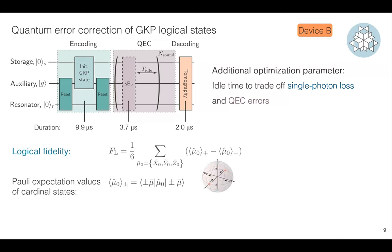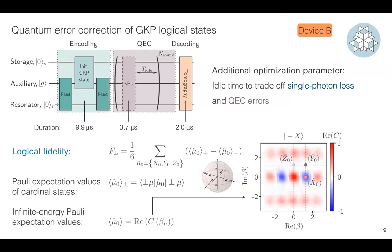Instead of measuring the full characteristic function, we measure only a few points to extract the logical fidelity. The logical fidelity is defined by looking at the distance between opposite cardinal states on the Bloch sphere — as decoherence occurs, these collapse toward the center. These expectation values are simply measurements of the real part of the characteristic function at specific points in phase space: measuring X, Y, and Z at those respective points.